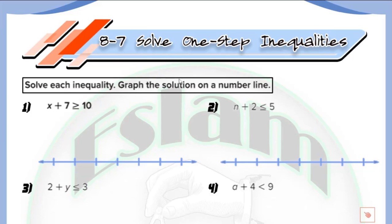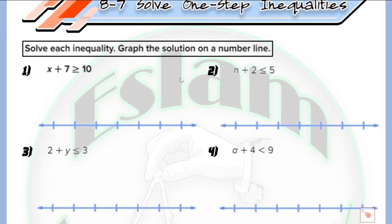In question number 1, we need to solve each inequality then graph the solution. We have x plus 7 more than or equal to 10. We will use the inverse operation — because we have plus 7, I will subtract 7. So x will be more than or equal to 10 minus 7, which equals 3.